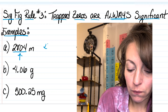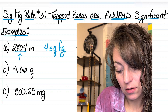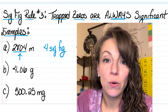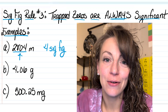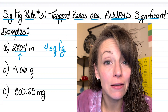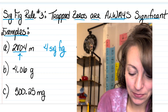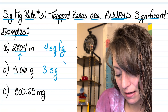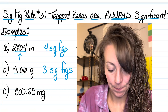So I have a total of four significant figures in that particular measurement. In letter B I have four point zero six grams. Once again we have one trapped zero — that's between the four and the six in that measurement. Even though there's a decimal point there, it's still a trapped zero, so we have three sig figs in that particular measurement.